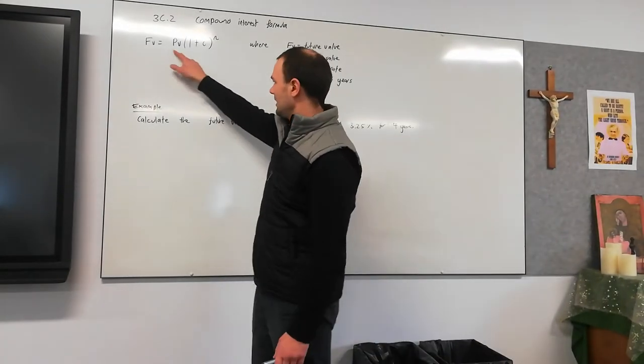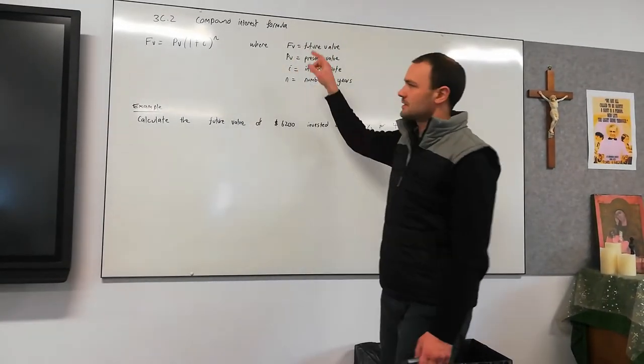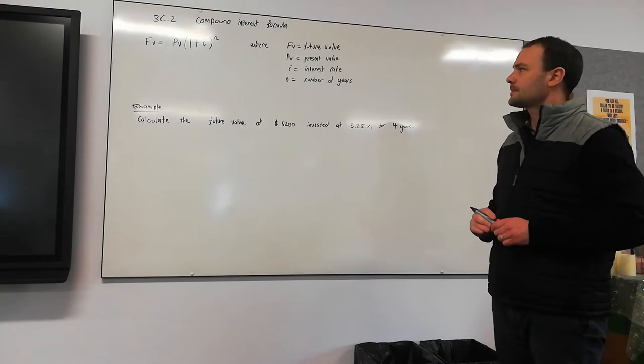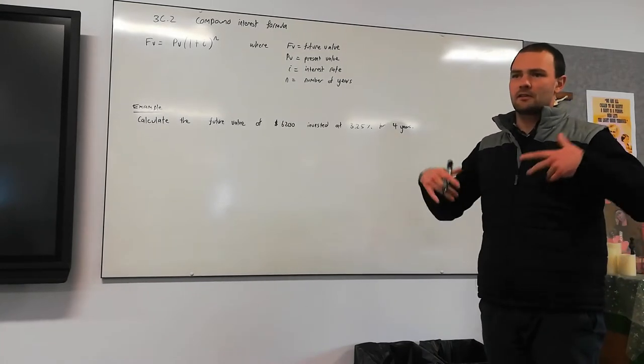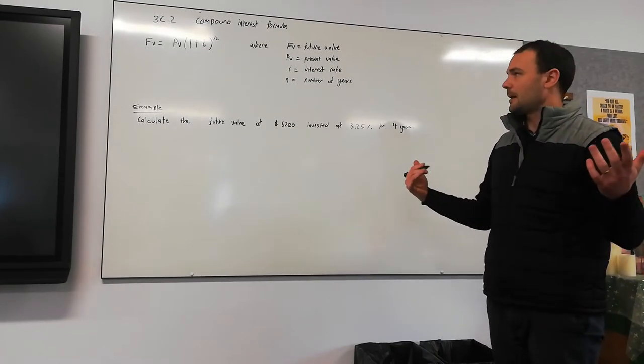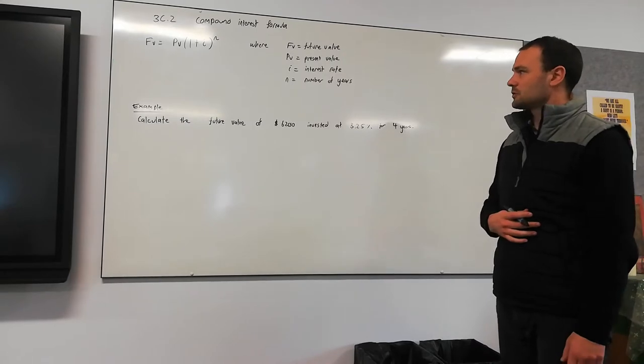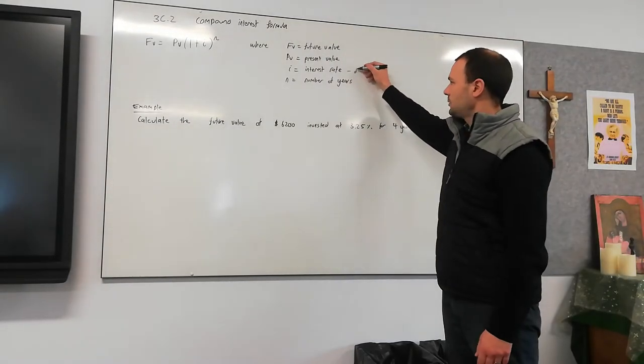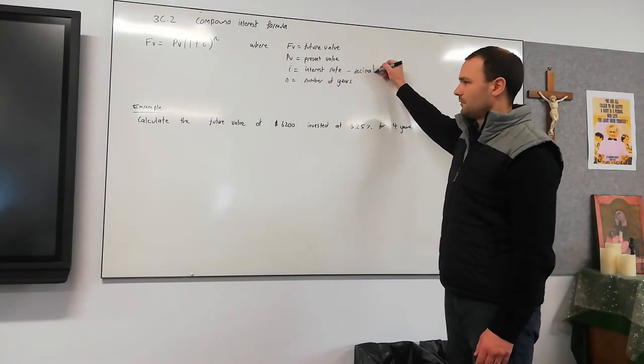This is the formula we're going to be using here, where FV represents the future value of our investment, PV represents the present value (how much we're putting in the bank), I is the interest rate (this must be expressed as a decimal), and N is the number of years.